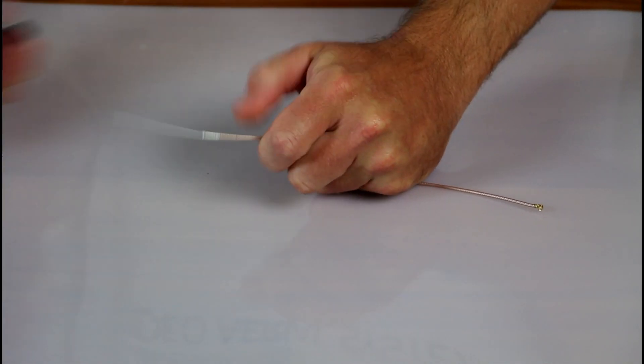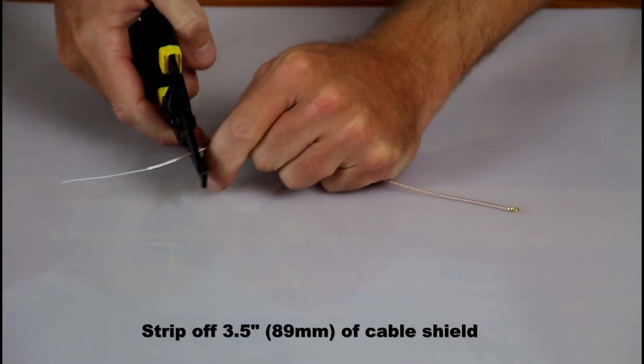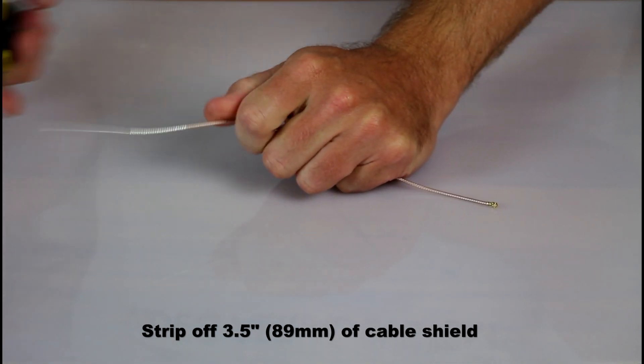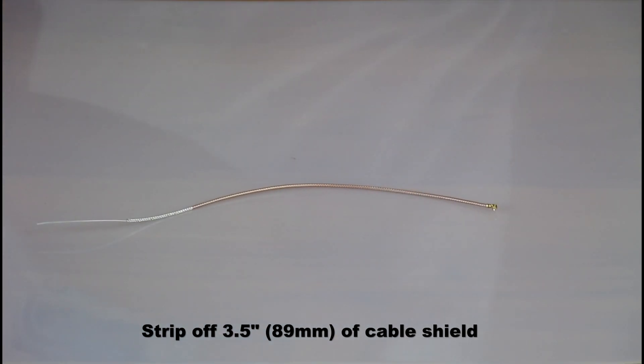Start off this build by stripping the jacket off of the cable. You can see that I'm doing this progressively at about half an inch or one centimeter at a time and you can also see that half of it's already been stripped and thus I don't recommend attempting to remove all three and a half inches of shield in one shot.